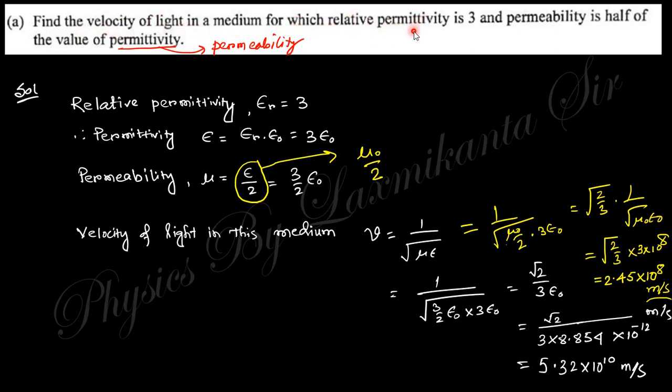Relative permittivity εr = 3, and permeability is half of that value of permittivity. If you take the permeability as μ/2, you will get this velocity. I think this should be relative permeability, and then the answer will be in the yellow color, 2.45 × 10^8 m/s. Or if this is relative permittivity, then the answer will be in white color, 5.32 × 10^8 m/s. I think this will be the correct answer.